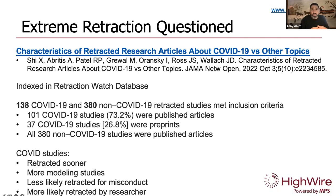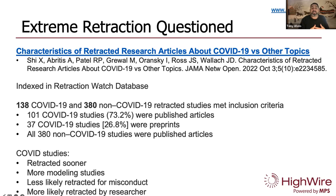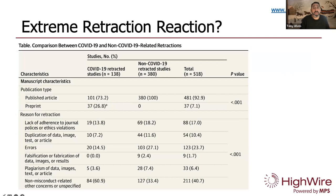There's one paper that provides some interesting data, published in JAMA Network Open this past October. It's called 'Characteristics of Retracted Research Articles About COVID-19 Versus Other Topics.' The authors say retractions have increased in both number and prominence over the past two decades. This cross-sectional study compares author characteristics and reasons for retractions of COVID-19 and non-COVID-19 research articles. Some of the findings include that COVID studies were retracted more quickly than non-COVID studies, there were more COVID modeling studies retracted, COVID studies were less likely to be retracted for misconduct, and COVID studies were more likely retracted by the researcher.